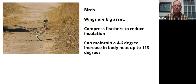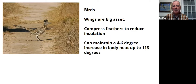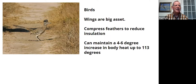Birds can maintain a pretty high body temperature — unlike mammals, they can get their body heat up to 113 degrees without any problem. Their bodies can fluctuate 4 to 6 degrees in just a matter of minutes. Birds don't sweat, but they breathe through their mouths — you see a lot of birds in the desert with their mouths open, cooling themselves off that way.